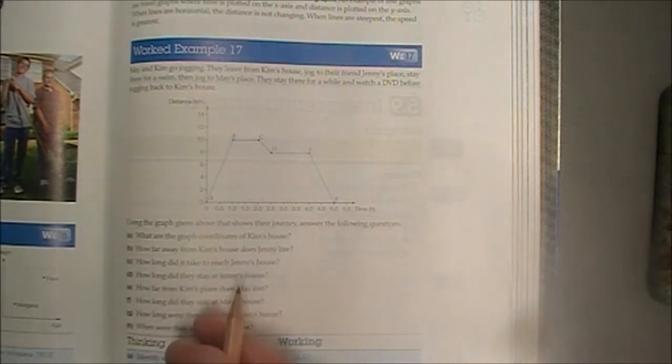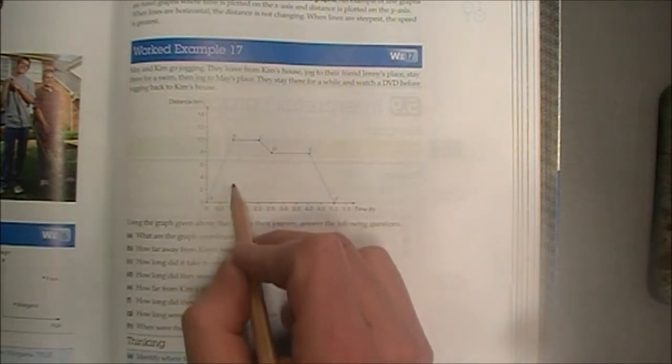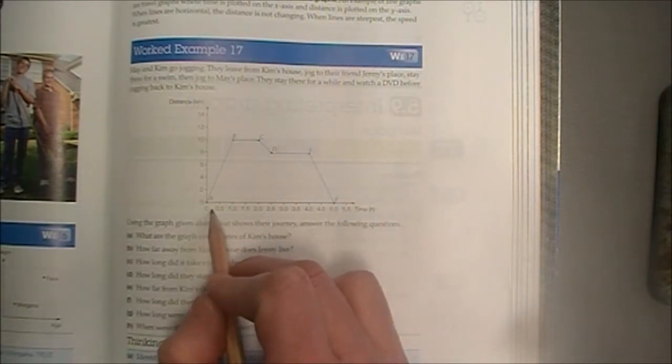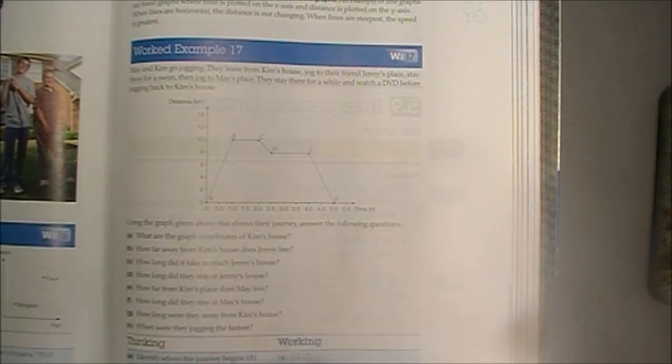How long did it take to reach Jenny's house? We follow from Jenny's house down to the x-axis, where we have our time, 0 to 1, so that's one hour it took them.